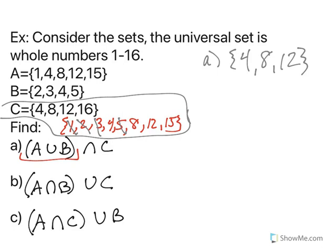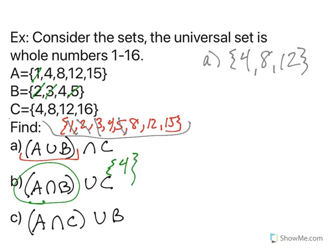Now for b, we'll get rid of this here. For b, we're finding first a and b. So what do a and b share? Well, they don't share a 1 or 2. They share a 4. That's it. They share a 4. So a and b is 4.